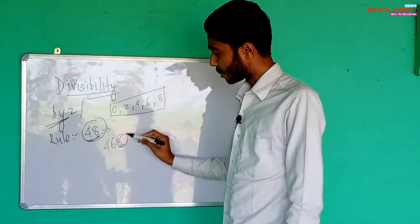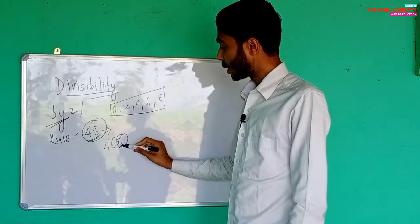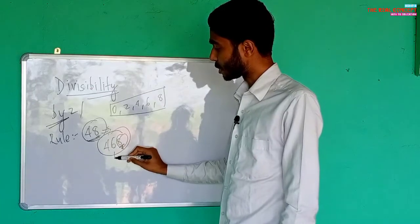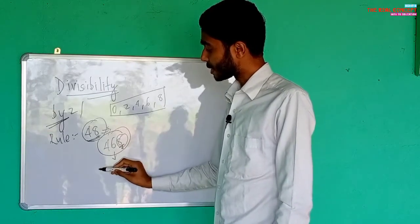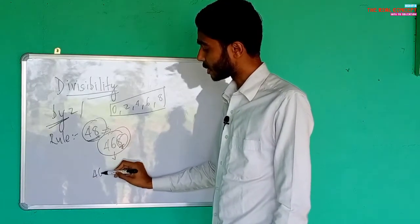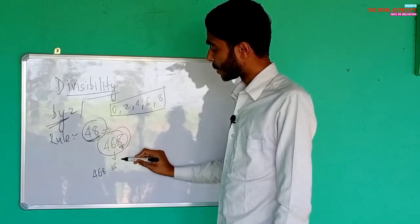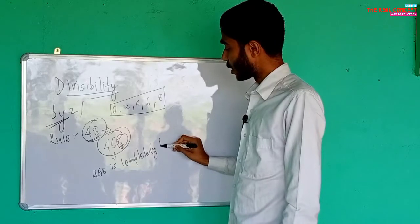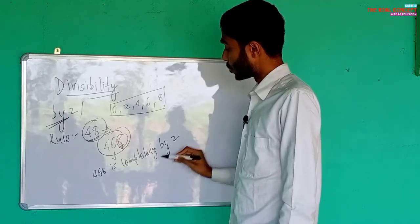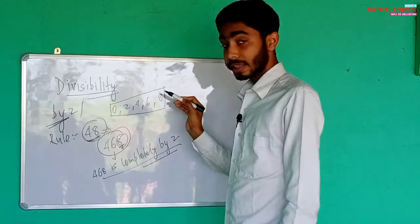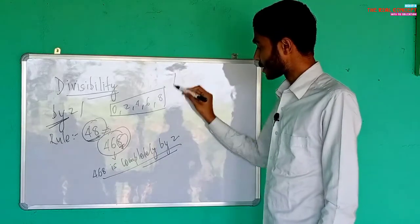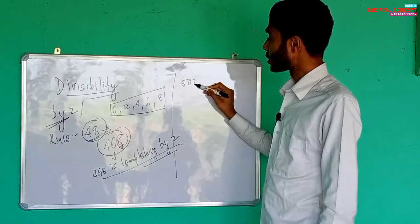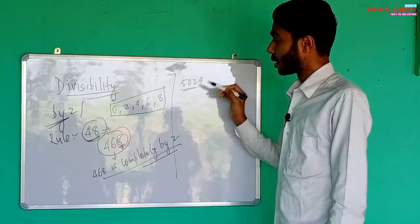For example, take the number 468. The ones place of 468 is eight. Since eight belongs to the group zero, two, four, six, eight, we can say that the number 468 is completely divisible by two.